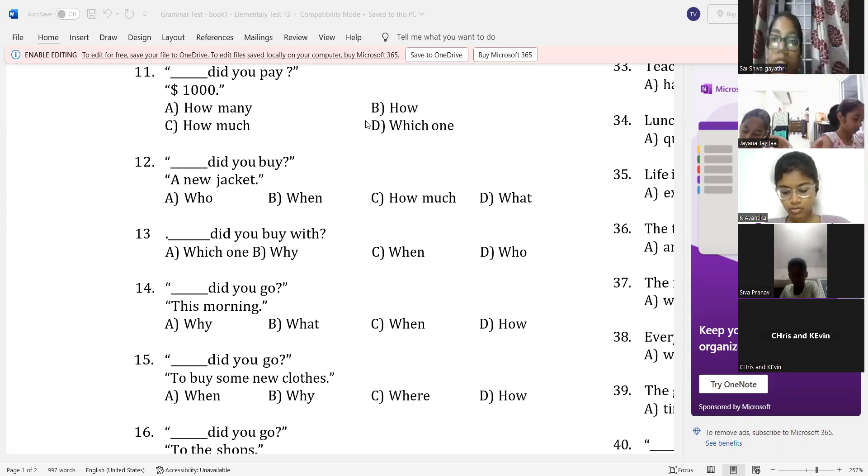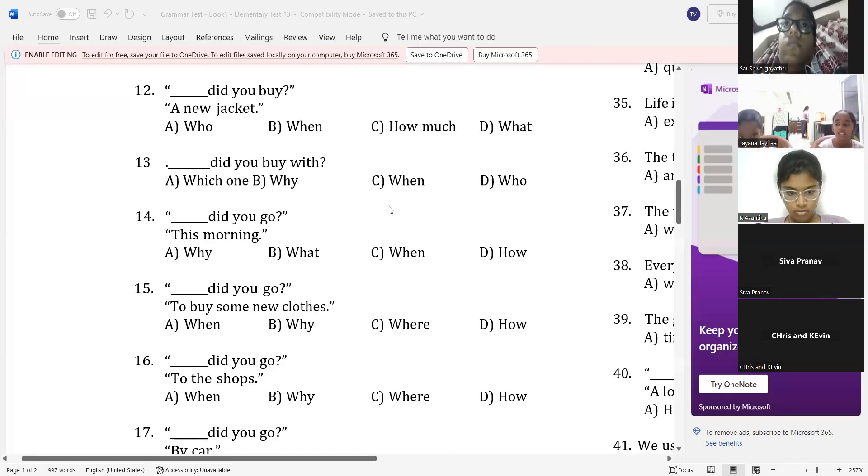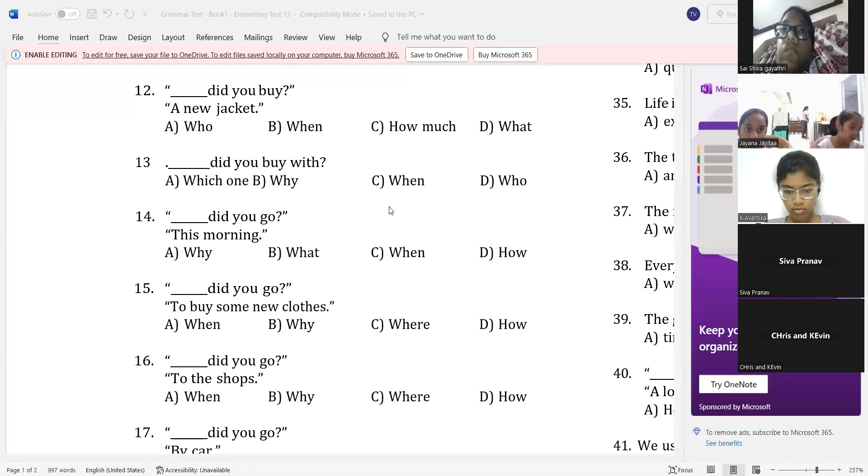It need not be. Subject to whom and all. Most of the times, it is exchangeable. Especially in American English. But, you cannot go with any other answer except for who we are. When did you buy with? No. Why did you buy with? No. Which one did you buy with? No. The best possible answer could be whom here. So, 14. Dash, did you go this morning? When did you go this morning? Super. Next. Dash, did you go to buy some new clothes? Why did you go to buy some new clothes? That's all. That's all. Very nice. Why did you go? Super.